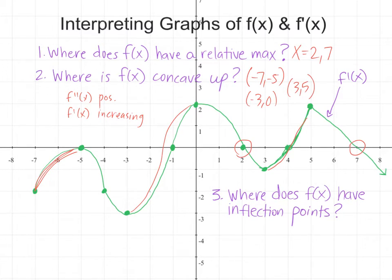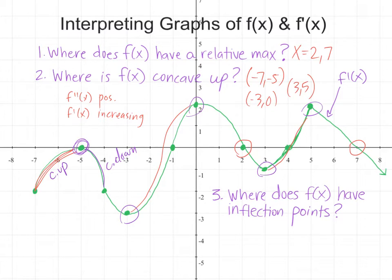Inflection points are changes in concavity. We just talked about how concavity is up when f prime is on its way up, and it's going to be down when f prime is on its way down. So in general, a relative extremum on f prime is an inflection point on f. I'm going to have inflection points wherever my concavity changes. It doesn't matter that my second derivative is undefined where my first derivative has a sharp point — it's still a relative max and still a change in concavity. So negative five, negative three, zero, three, and five are all going to be inflection points because f prime changed from increasing to decreasing, which means concavity changed from up to down or vice versa.